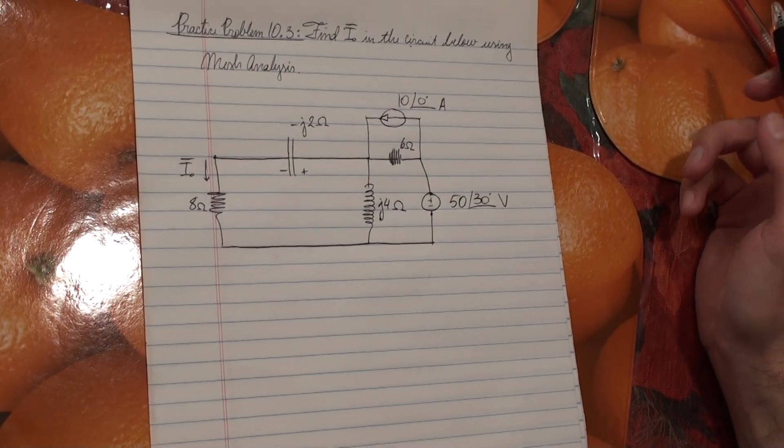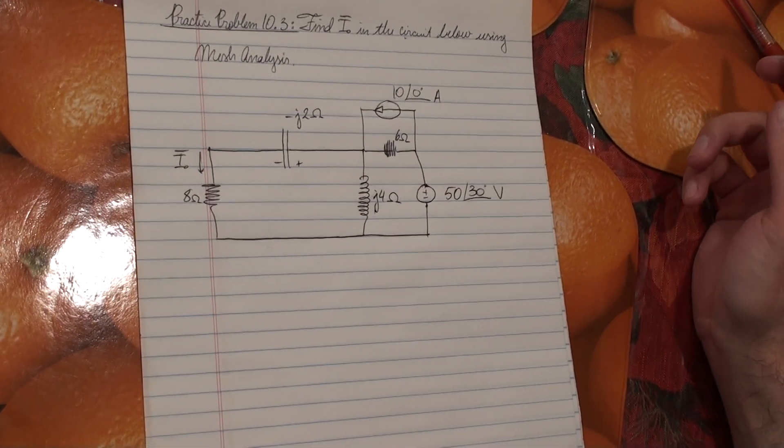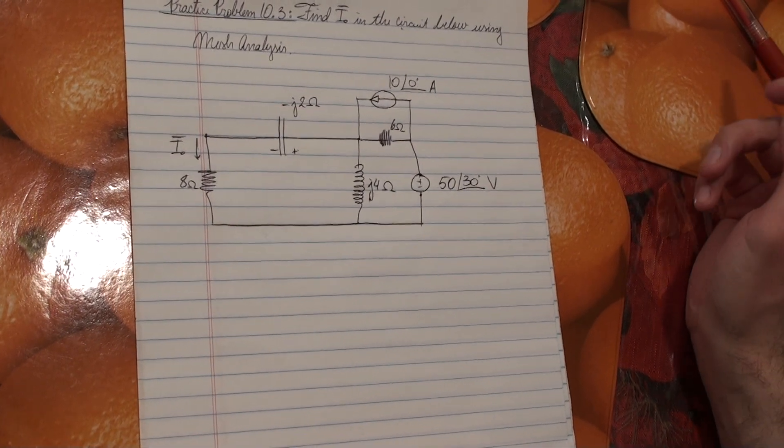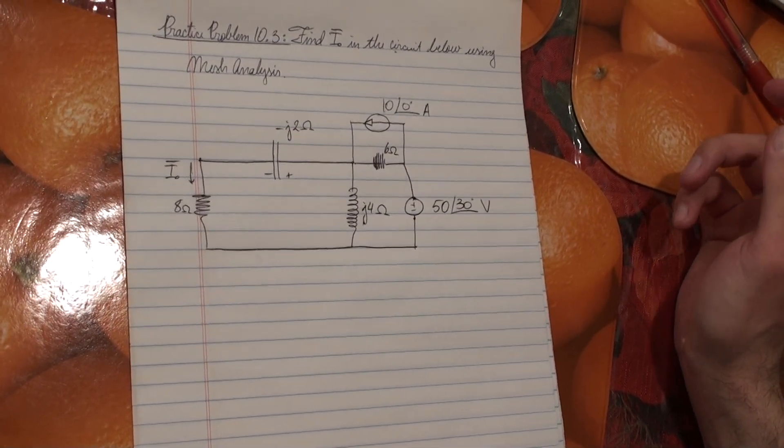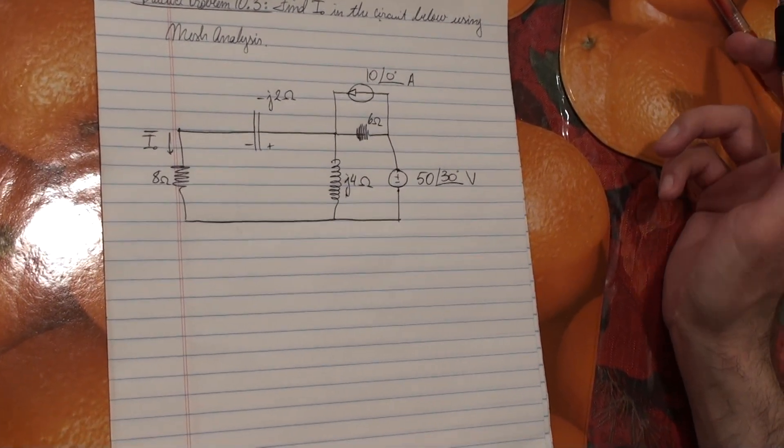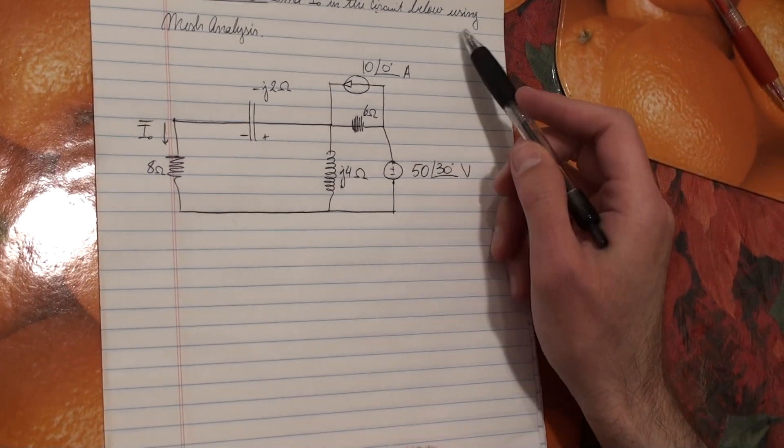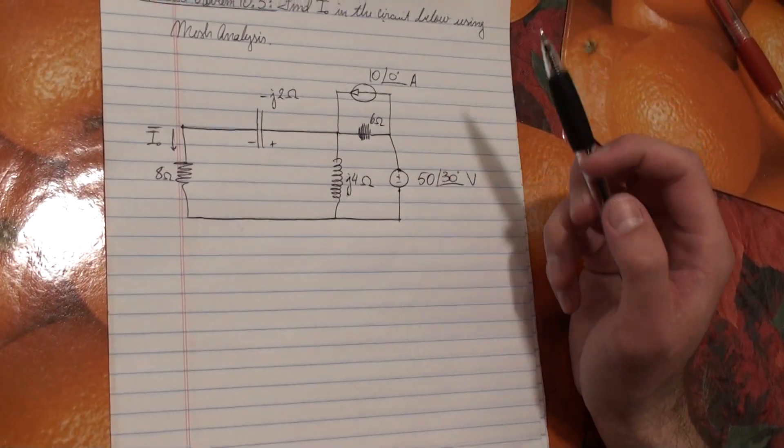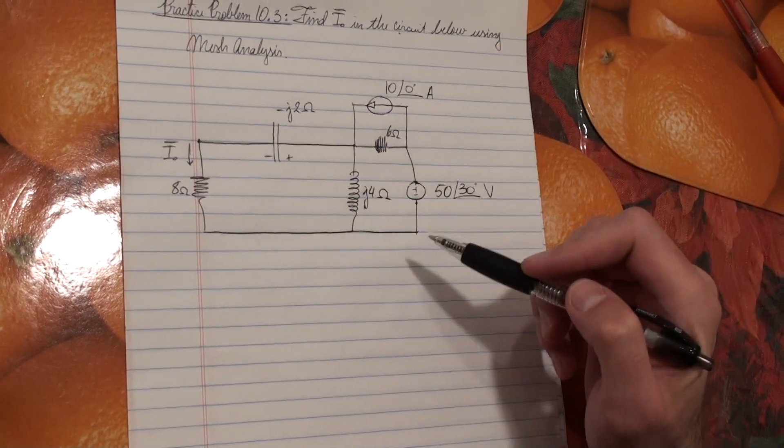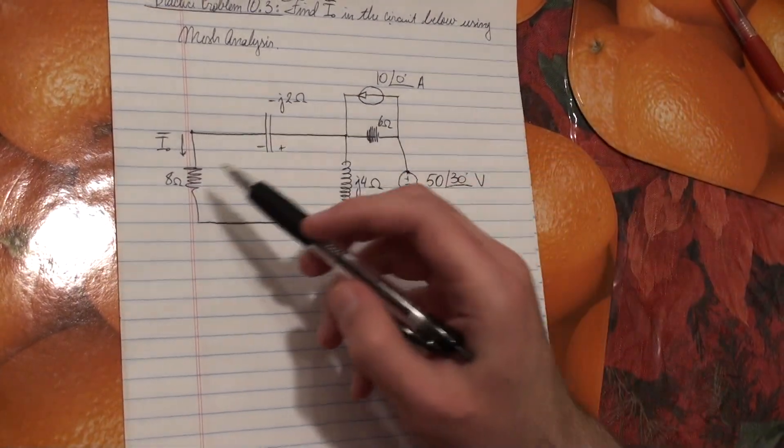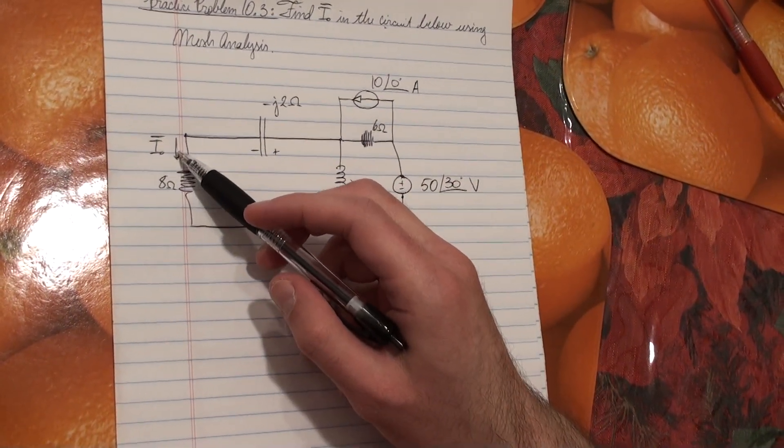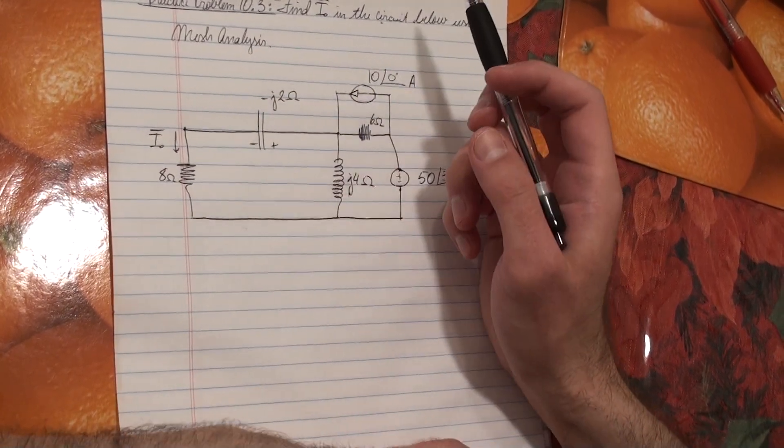Hey guys, so this is practice problem 10.3 from the Alexander and Sadiku book, Fundamentals of Electric Circuits. So the problem says, find I0 in the circuit below using mesh analysis. So this is the circuit, all the constants that we're given, and we're given this I0, this is what we're looking for.